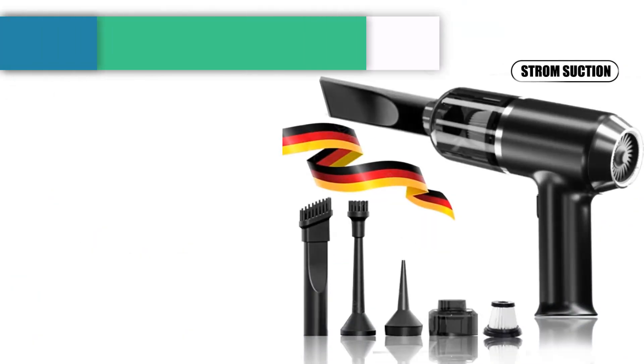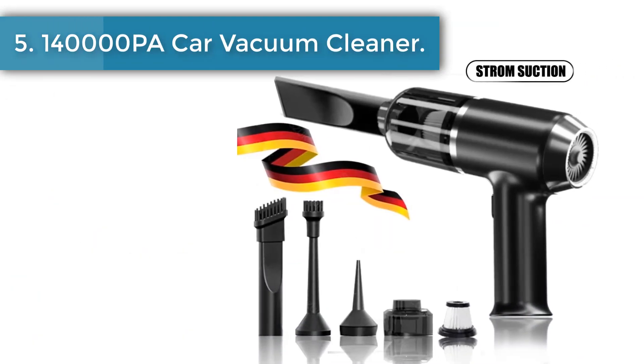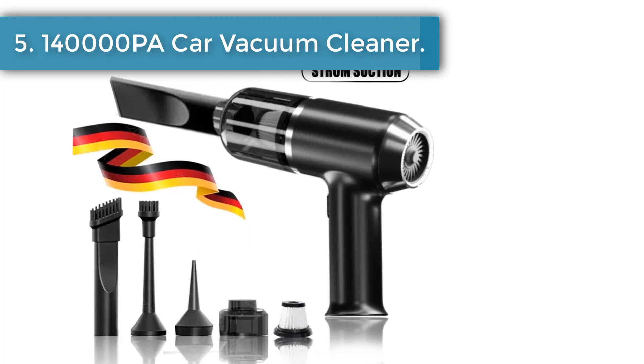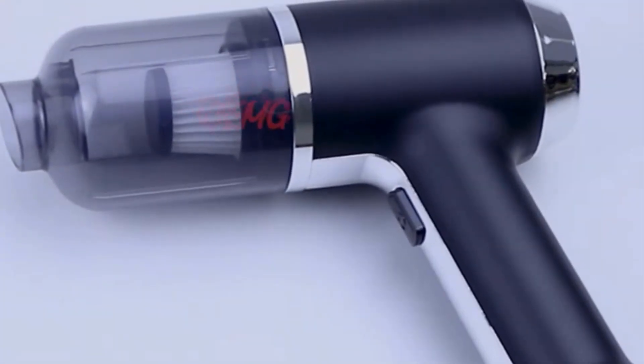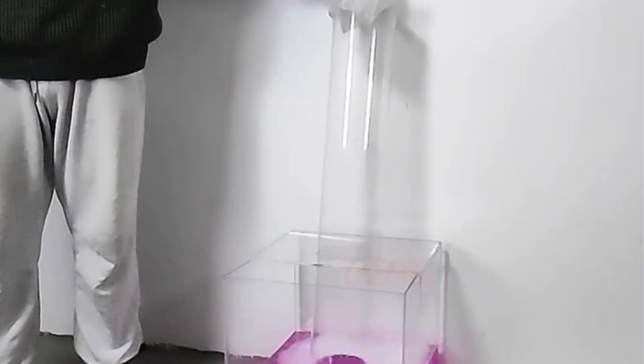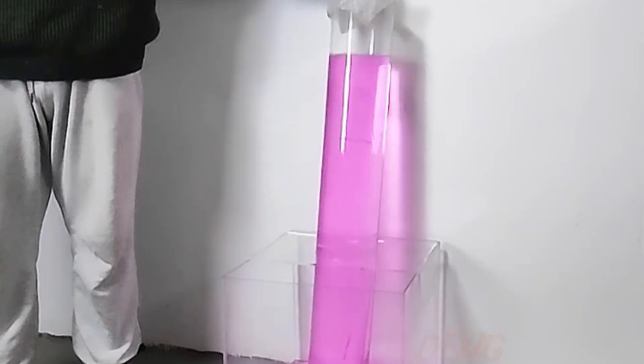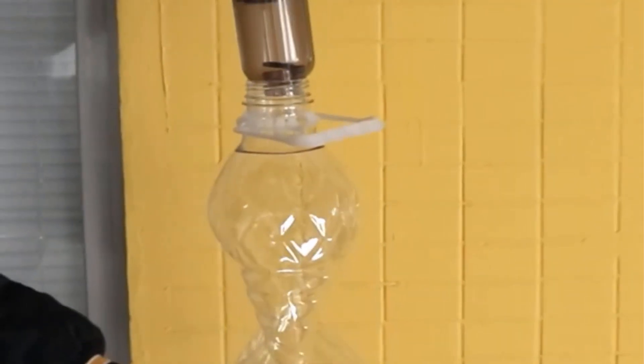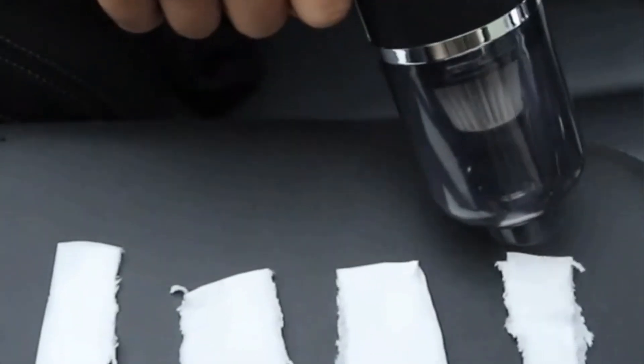Number five: 140,000 PA car vacuum cleaner. Introducing our car vacuum cleaner with an impressive 140,000 PA dual purpose suction power, a versatile and powerful cleaning solution for both your vehicle and home appliances. This wireless handheld vacuum combines robust suction capability with the convenience of a mini blower, making it an essential tool for maintaining a spotless environment wherever you go.